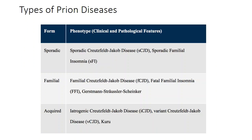Prion diseases can be sporadic, familial, or acquired. Sporadic diseases include sporadic Creutzfeldt-Jakob disease and sporadic fatal familial insomnia. Familial ones include familial CJD, fatal familial insomnia, and Gerstmann-Sträussler-Scheinker syndrome. Acquired prion diseases include iatrogenic CJD, variant CJD, and Kuru — which was the first human prion disease discovered.